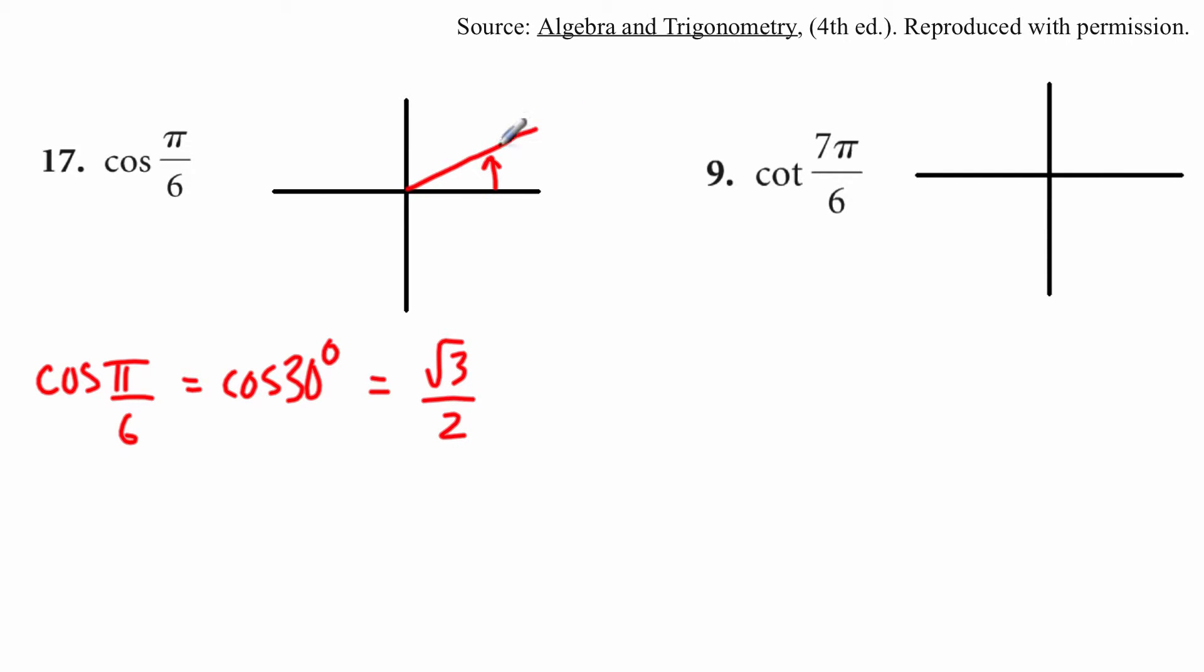Also, because it's in this quadrant here, it's positive. Or cosine is positive there. Actually, all of them are positive there. So it's a positive root 3 over 2.